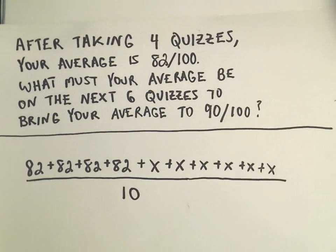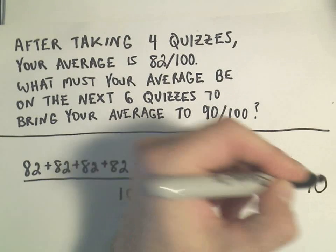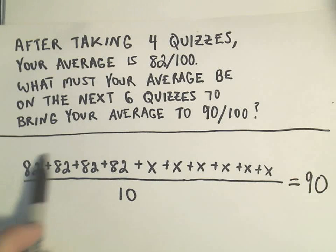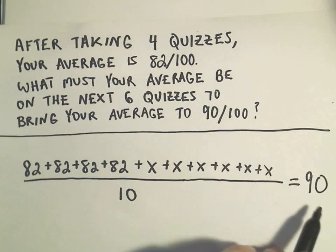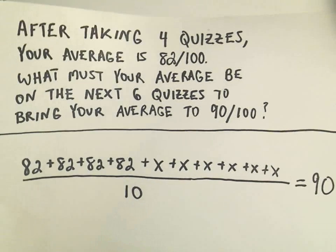But again, we want this average to equal 90, okay? So we've got our average of ten things on the left side, namely our ten quizzes, and again, we simply want that to equal 90. So this is now the equation that we're going to have to solve.